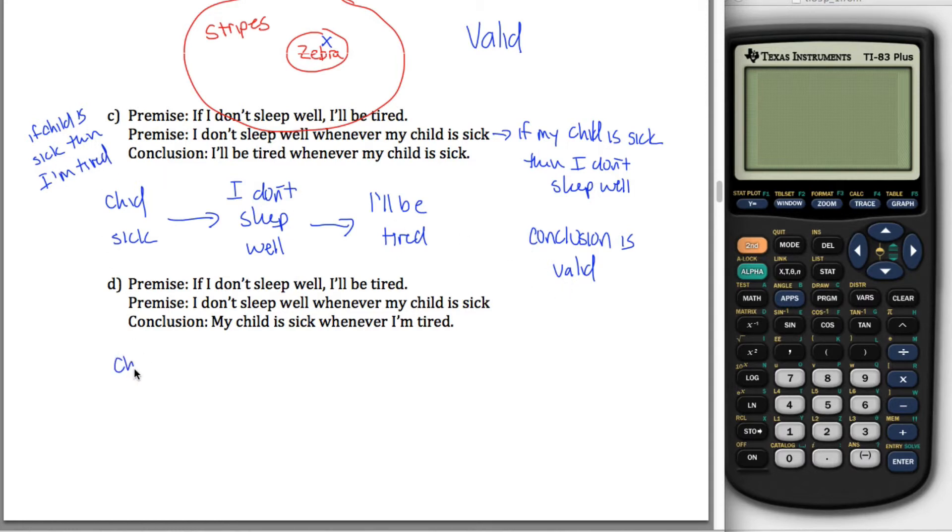The next one, we got the same, this premise, if I don't sleep well, I'll be tired. Fine. Same picture as I have up here. If I don't sleep well, arrow, I'll be tired. I don't sleep well whenever my child is sick. In other words, if my child is sick, then I don't sleep well. Child sick implies don't sleep well. Don't sleep well implies tired. The conclusion is my child is sick whenever I'm tired. That is not valid.